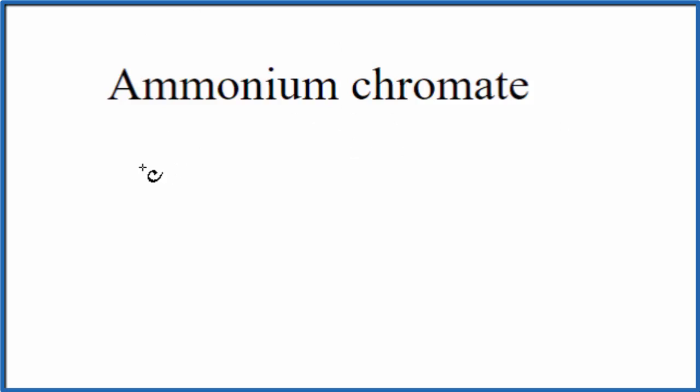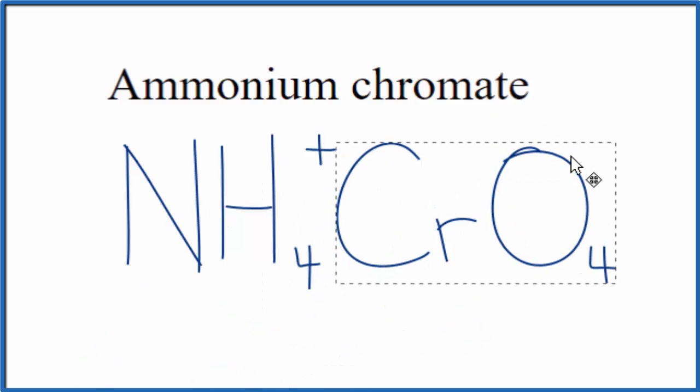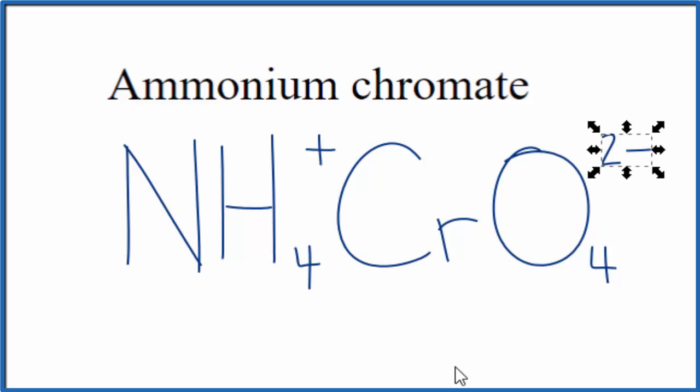We've either memorized that the ammonium ion is NH4+, or if we're allowed, we look it up on a table of polyatomic ions. For the chromate ion, the same thing. Either you memorize that it's CrO4 with an ionic charge of 2-, or if you're allowed, you look it up.